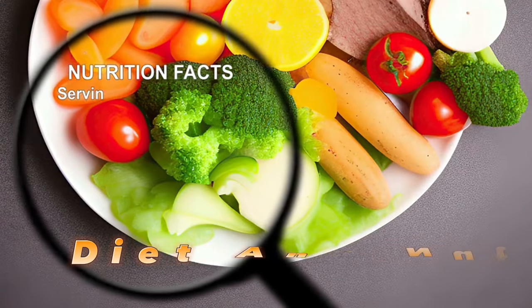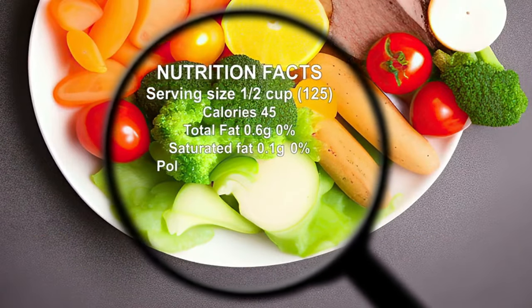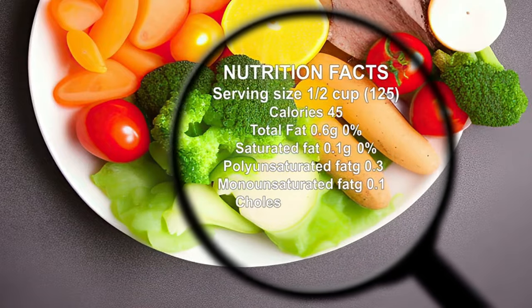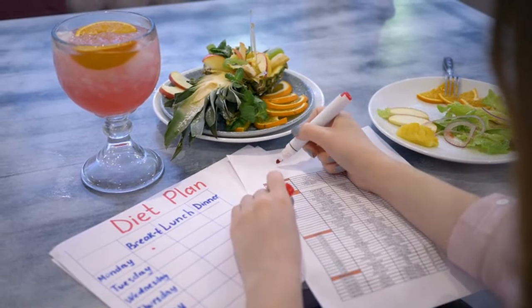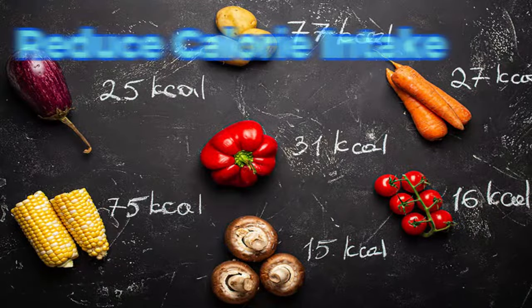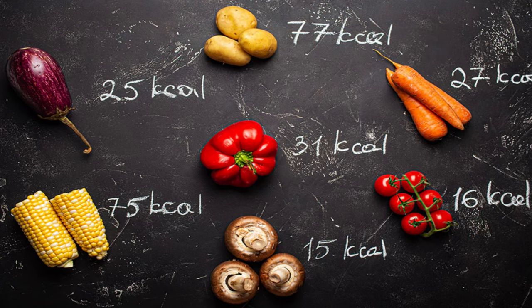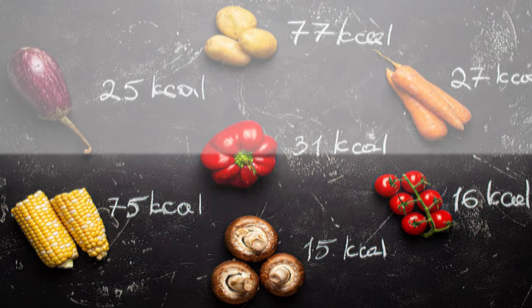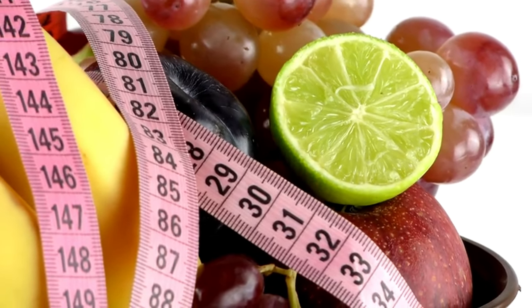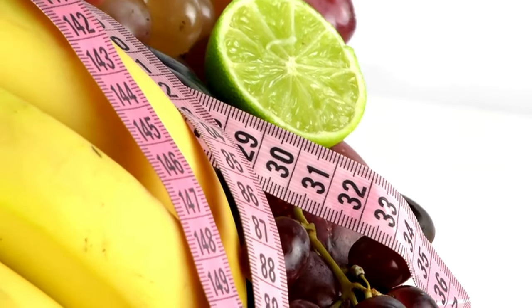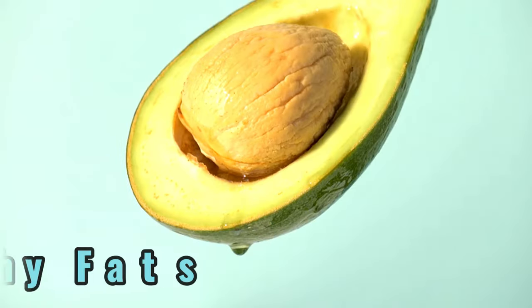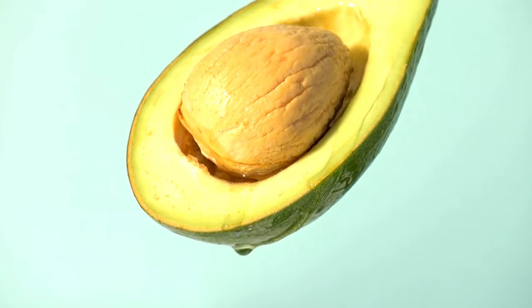NAFLD is a common liver condition that can often be effectively managed through targeted dietary and lifestyle changes. Adopting a well-balanced, nutrient-rich diet is crucial for controlling disease progression and enhancing liver health. First, reduce calorie intake: obesity and excess body weight contribute to NAFLD development, so controlling calorie intake to achieve gradual, sustainable weight loss of around 5–10% of total body weight can lead to significant improvements in liver function. Second, choose healthy fats — opt for unsaturated fats found in avocados, nuts, seeds, and olive oil.